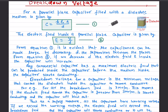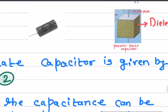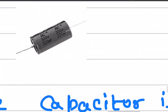The breakdown voltage for a capacitor is the minimum voltage that causes the dielectric inside the capacitor to become conductive. To understand what that means, take a look at this capacitor — it has a capacitance of 200 microfarads and the working voltage, or breakdown voltage, is 300 volts.